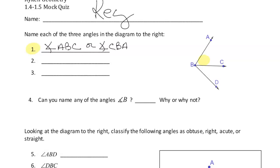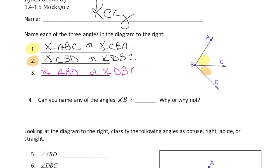Let's name another one. The bottom one is going to be angle CBD or angle DBC. Then the big one is ABD — either ABD or angle DBA. What you're going to notice for every single one of them is that the vertex is in the middle — that letter that's in the center of the angle.